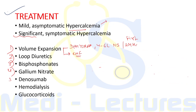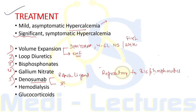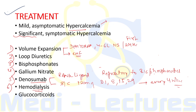Denosumab is a monoclonal antibody against RANK ligand used in hypercalcemia refractory to bisphosphonates. It is given subcutaneously at 120 mg on day 1, day 8, day 15, day 29, and then every four weeks. Dialysis is rarely needed in some instances.